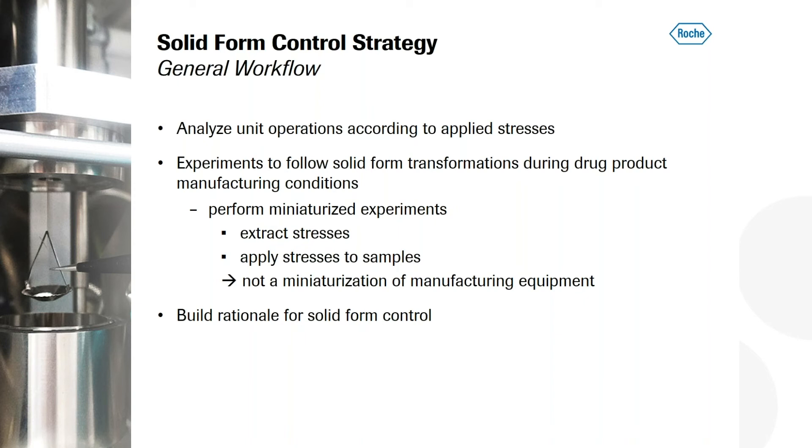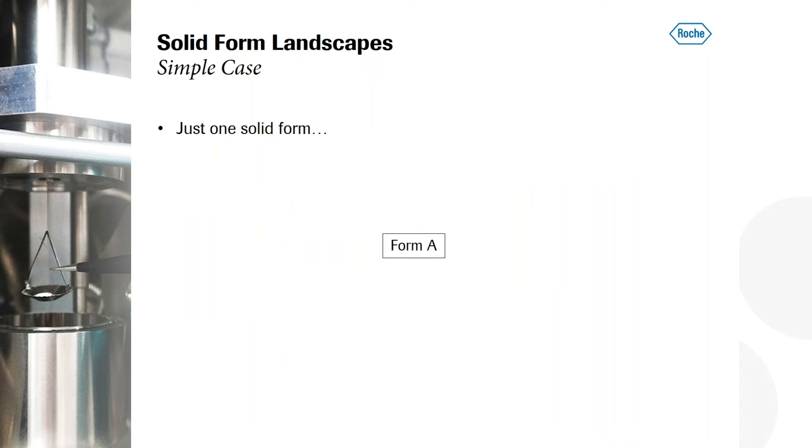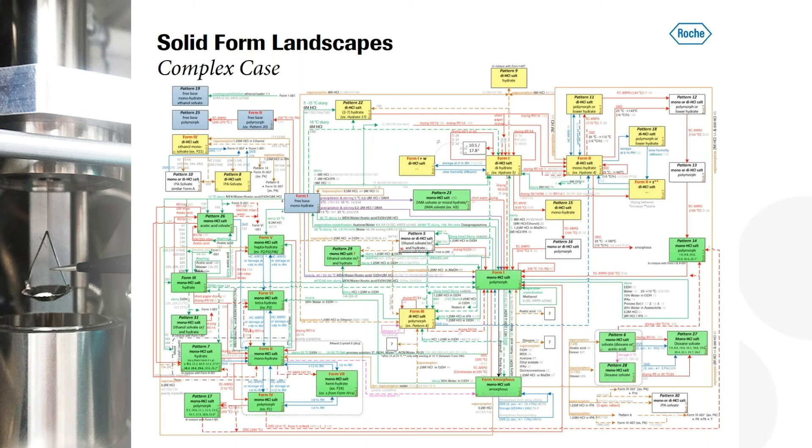So now let's jump to some applications and case studies. And the first one is a rather simple one. You just have one solid form. When we think back to this quote from Walter McCrone, maybe in that case you simply didn't have enough time to look deep into this compound. But of course also we have compounds that where we only have one solid form, one crystalline solid form and it's fine. So for this product you don't have any problems with respect to the solid form at least. But we might have more complex cases. And this is also a true example that this is not just an image. What you can see here is a solid form landscape of a, it's already marketed product. This is the selected solid form. It's a mono-HCl salt, it's a polymorph, and all the lines here are transition paths. So you can see it's a rather complex landscape.